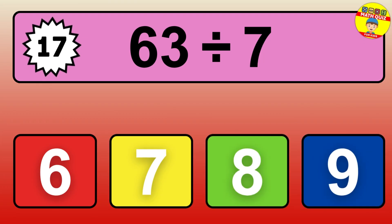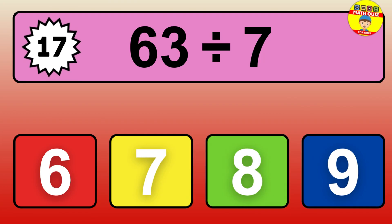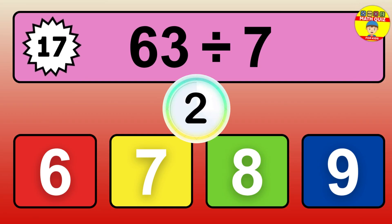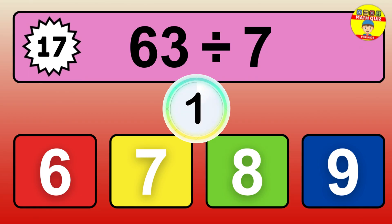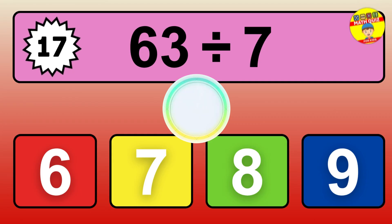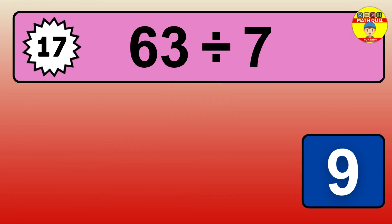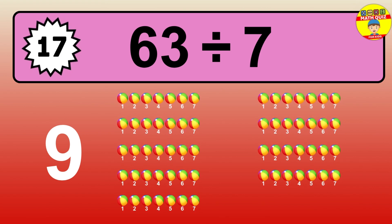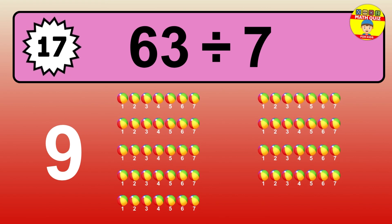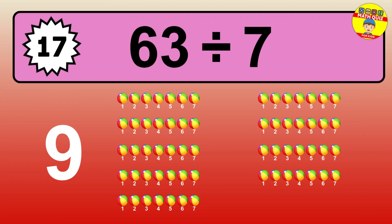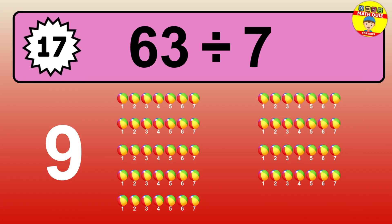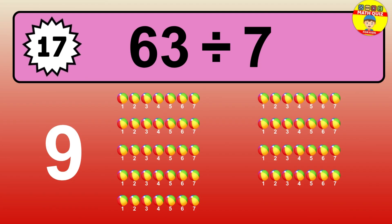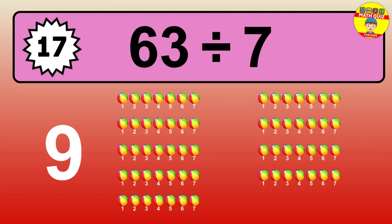27 divided by 3 — time to think. Let's go to the solution. Divide the number 27 by 3. Each group contains 3 units, so dividing 27 by 3 results in 9 equal groups. Thus, the result is 27 divided by 3 equals 9.